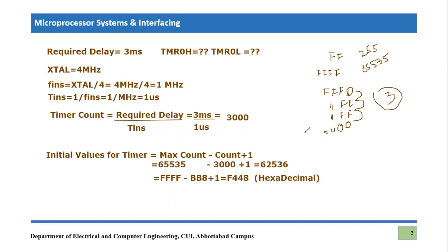That count of three is exactly what this formula refers to. The maximum value minus the starting count gives us the initial value, and the additional plus one accounts for the rollover transition. So this formula is derived directly from the rollover concept of basic timer operation. You can derive it from first principles, or simply memorize it.